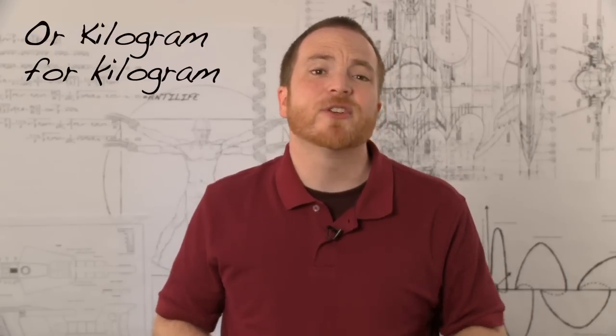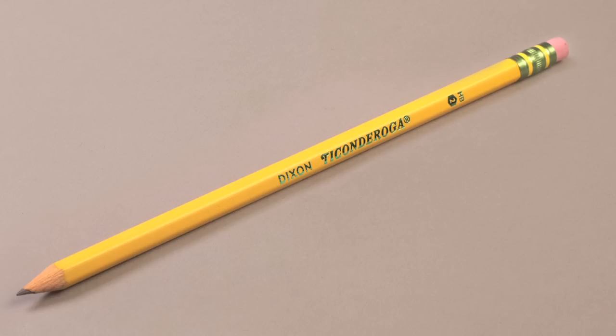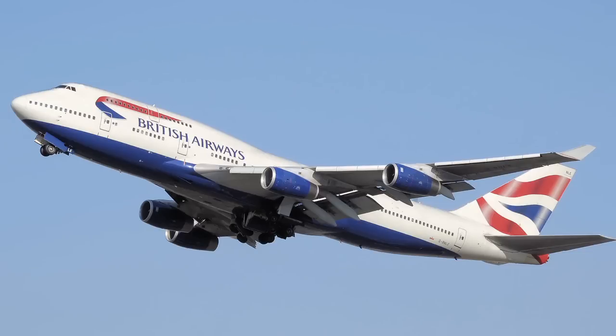Pound for pound, spider silk is five times stronger than steel and three times tougher than Kevlar. A thread a millimeter thick would easily support a human being as he swung from building to building through New York City. A thread the width of a pencil could stop an airplane in mid-flight.